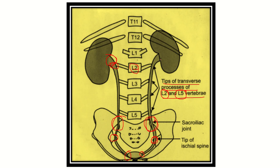This is the normal pathway of the ureter: from the tip of the transverse process of L2, L3, L4, L5, then to the sacroiliac joint.